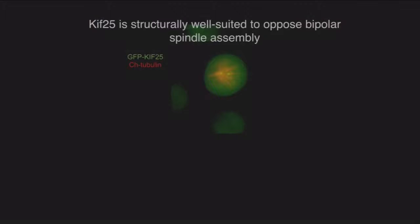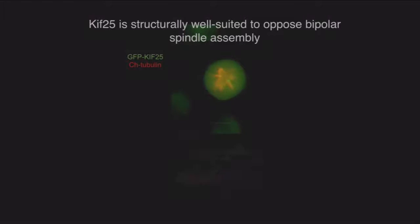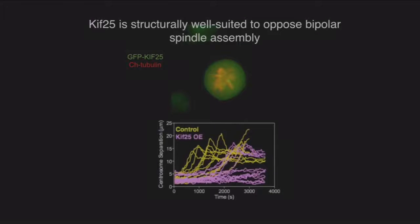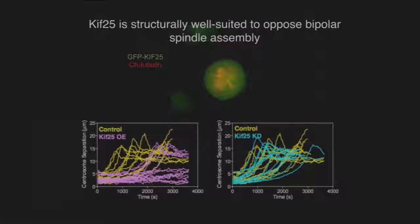So we thought: if this is a minus-end directed bipolar tetramer, maybe it holds centrosomes together. We overexpressed it in mitotic cells in monastrol and then washed out the monastrol. The cell has a terrible time trying to separate those centrosomes when there's too much KIF25 around. My postdoc Justin Deckerow found that in most cases, when you overexpress KIF25, you either fail to separate centrosomes or are delayed in doing so. However, to our disappointment, when we knocked down KIF25, we found no change in the extent or timing of bipolar spindle assembly.